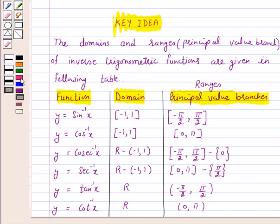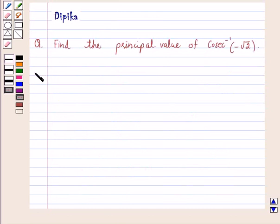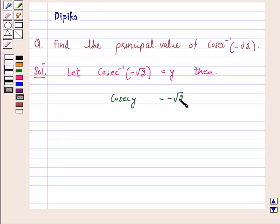So let's start the solution. Let cosecant inverse minus root 2 equals y. Then, cosecant y equals minus root 2, and this equals minus cosecant pi by 4, which is equal to cosecant of minus pi by 4.